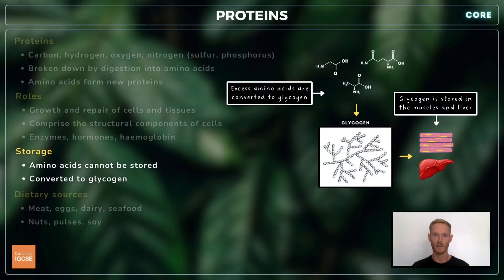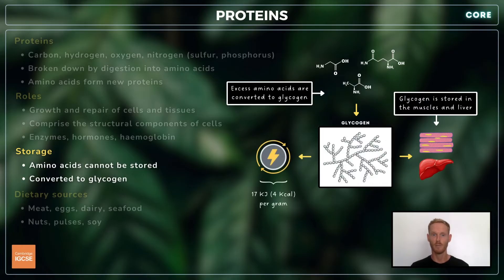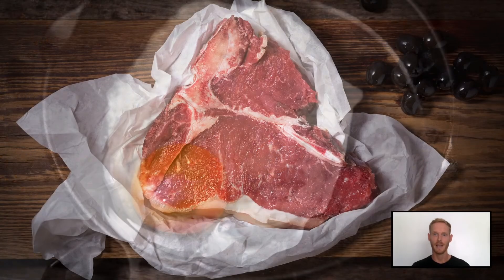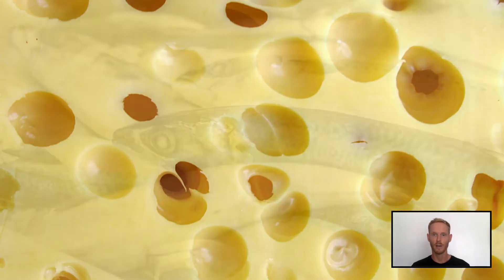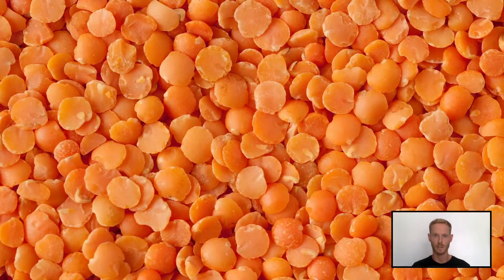Unlike fats and carbohydrates, excess amino acids cannot be retained. Instead, they're converted into glycogen in the liver, which is either oxidized or stored for later use. In this way, a gram of protein provides around 17 kilojoules or 4 kilocalories of energy, which is about the same as carbohydrate. Dietary sources include meat, eggs, dairy products, seafood, nuts, and pulses, including beans, peas, and lentils.